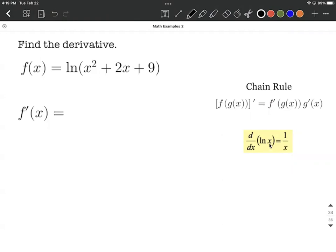But in our case it's not a simple x. Instead, it's one over the inner function, which we copy down as x squared plus 2x plus 9.